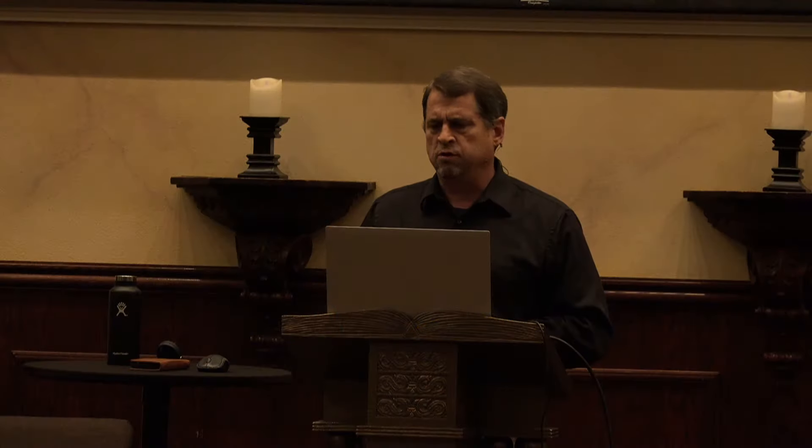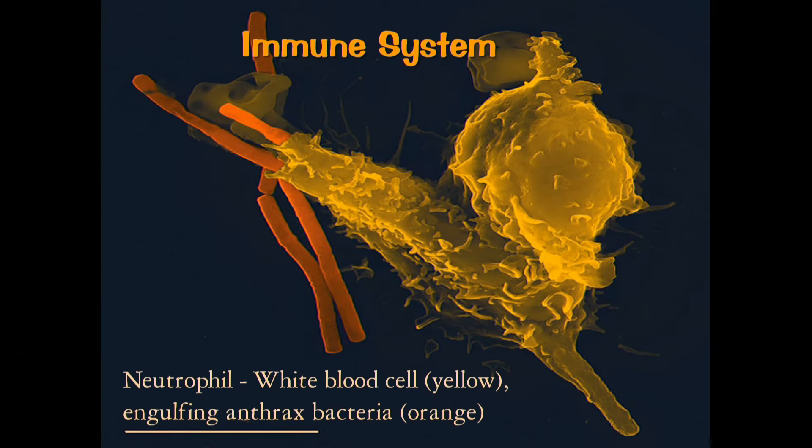Here's a picture of a neutrophil — these are cells that eat things that shouldn't be in the body. This is a neutrophil eating some bacteria in a colorized scanning electron micrograph image. The neutrophil is the yellow cell eating the rod-shaped bacteria — that's actually the bacteria that causes anthrax.